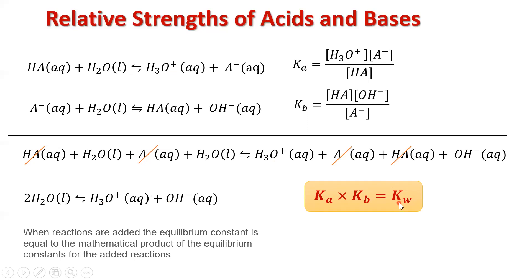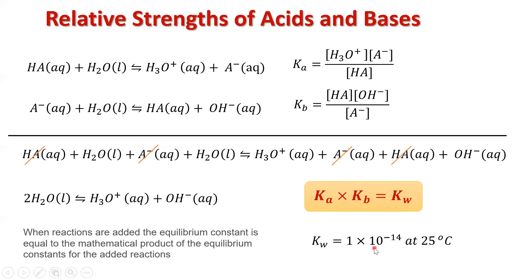Kw equals 1×10⁻¹⁴. If we're given Ka, we can calculate Kb, or if given Kb, we can calculate Ka. As long as we're at 25°C, Kw is 1×10⁻¹⁴. Remember that temperature is the only factor that affects the value of K — it will change depending on whether the process is endothermic or exothermic. Changing concentrations won't affect K, changing pressures won't affect K, but changing temperature does.